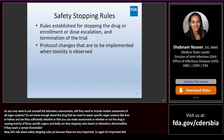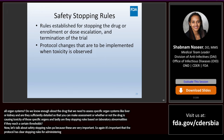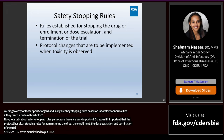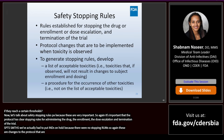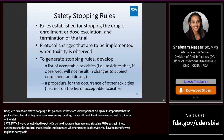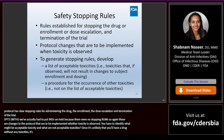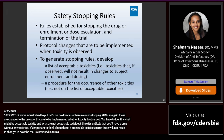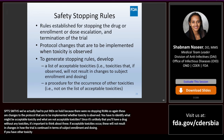It's important that the protocol has clear stopping rules for administering the drug, the enrollment, the dose escalation, and termination of the trial. Sometimes we've had to put INDs on hold because there were no stopping rules. These are changes to the protocol to be implemented when toxicity is observed. To have stopping rules, you have to identify what might be acceptable toxicities and what are not acceptable toxicities. If acceptable toxicities occur, these will not result in changes in how the trial is continued. If you have other toxicities that are not acceptable, you have to have a procedure in place for what you would do with the study.